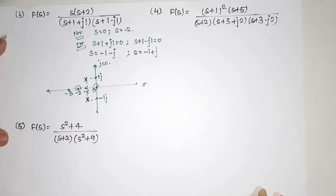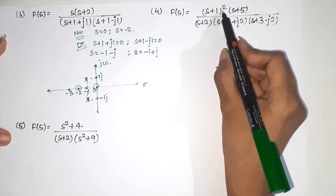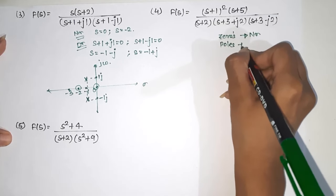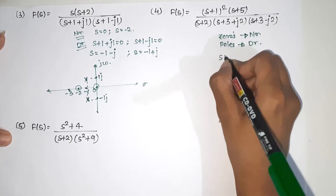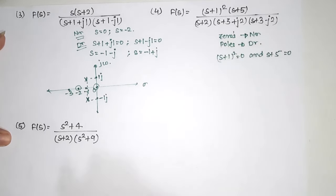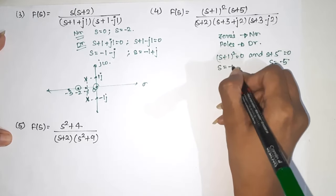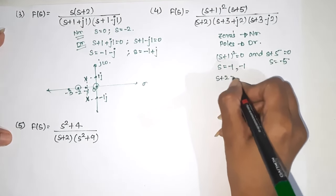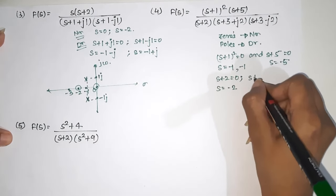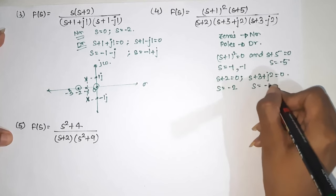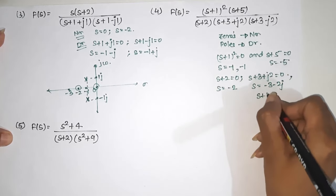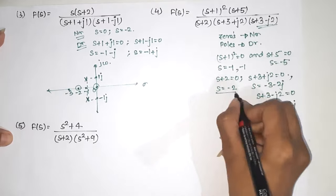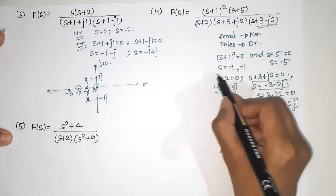Next question: f(s) = [(s+1)²(s+5)] / [(s+2)(s+3+2j)(s+3-2j)]. For zeros: (s+1)² = 0 gives s = -1 (twice), and s+5 = 0 gives s = -5. For poles: s+2 = 0 gives s = -2; (s+3+2j) = 0 gives s = -3-2j; and (s+3-2j) = 0 gives s = -3+2j. So we have 3 zeros and 3 poles.